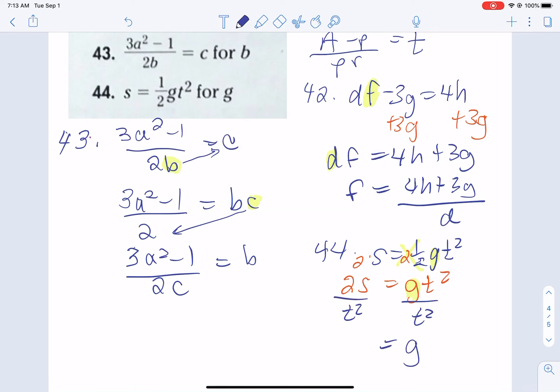And then we're done. So G is 2S divided by T squared. So there's just some real quick examples from Section 1-4 about solving an equation for a specific variable. Okay, bye guys.